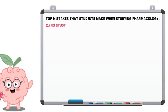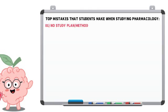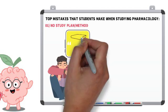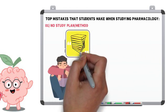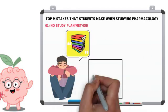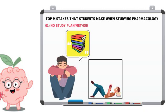Number one, no study plan or method. Students often feel overwhelmed about where to start studying or even how they should study. They often read through the book, cover to cover, or skim through lecture notes that are 5 chapters long.